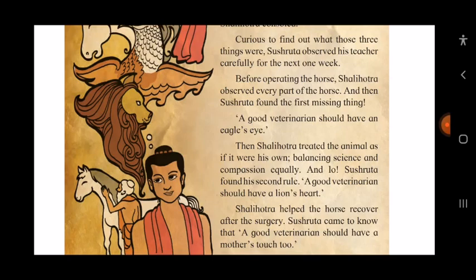Sushruta found the first missing thing: a good veterinarian should have an eagle's eye. A veterinarian is a person whose job is to treat sick or injured animals. Eagle's eye means a very sharp and watchful eye for all details. Only with a sharp eye will a veterinarian be good at his job.